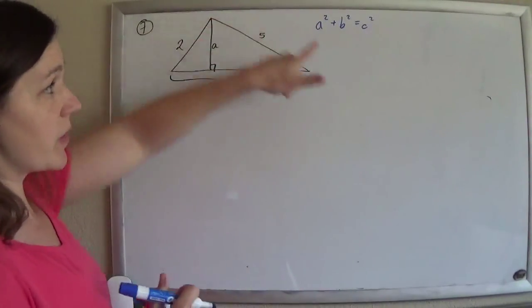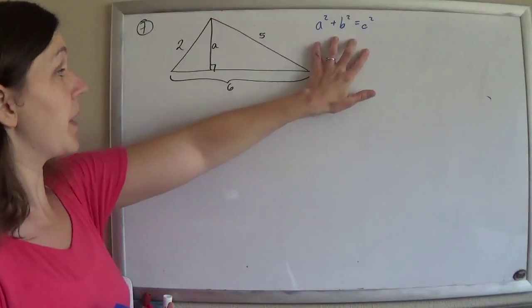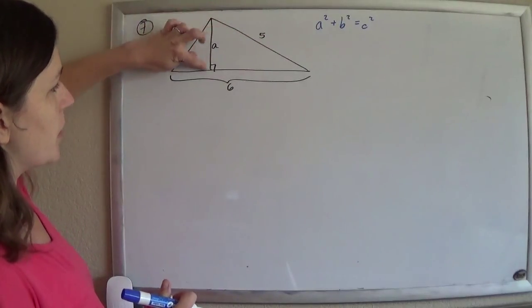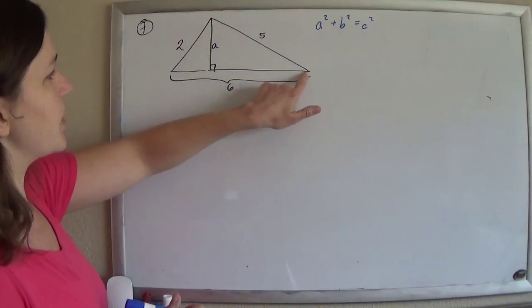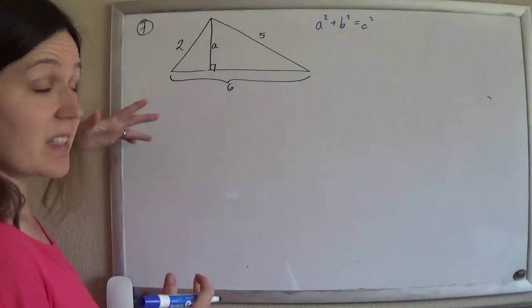So when we're looking for lengths of right triangles, Pythagorean theorem pops to mind, right? And so you're like, okay, a squared plus... oh crap, I don't know that squared. And then same thing here, we're missing stuff.